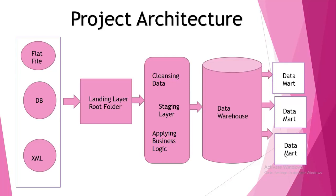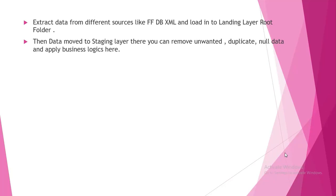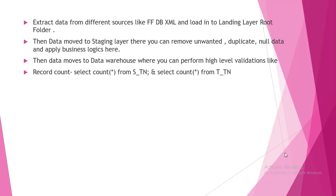To summarize: extract data from different sources like flat file, DB, and XML and load into the landing layer root folder. Data moves to the staging layer where you remove unwanted, duplicate, and null data and apply business logics. Then data moves to the data warehouse where you perform high-level validations. Record count validation query goes like: SELECT COUNT(*) FROM source_table and SELECT COUNT(*) FROM target_table - both records must be the same. If there is a difference, there might be duplicate data or null values in the target table, and we analyze why those extra records are coming.